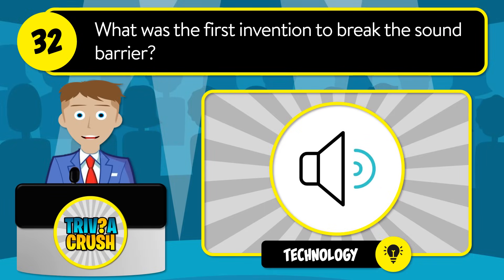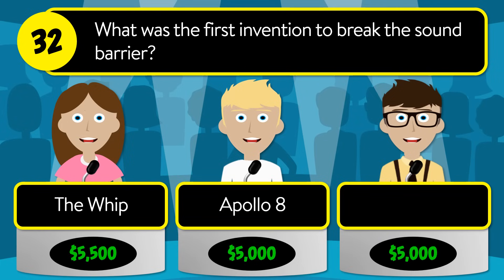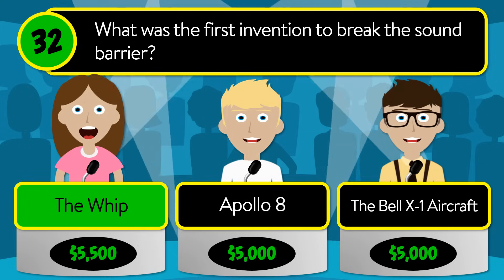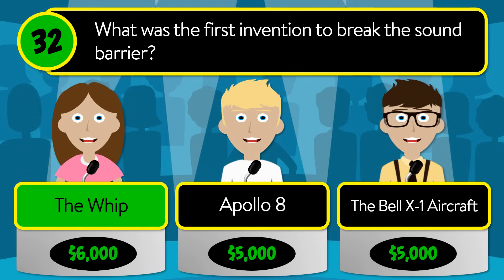Question number thirty-two: what was the first invention to break the sound barrier? Was it the whip, Apollo 8, or the Bell X-1 aircraft? The correct answer is the whip.